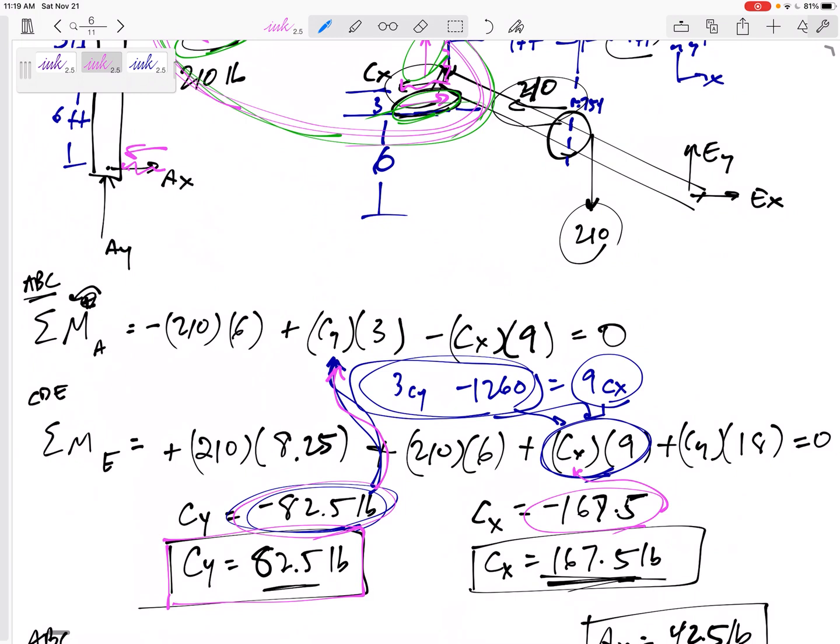then sum of the moments equals zero. So maybe you just wanted to look at bar ABC, and sum of the forces in X equals zero. Write those three equations. You wouldn't be able to solve. And then I would jump to bar CDE, and I would write those three equations. I wouldn't be able to solve.